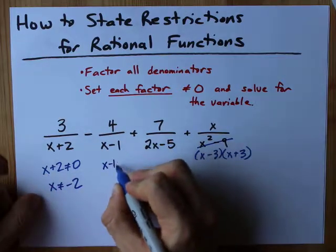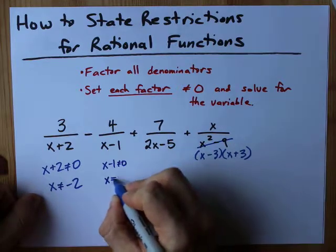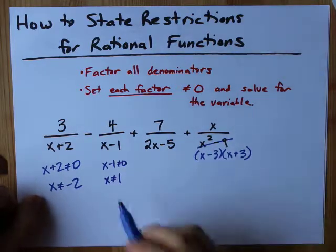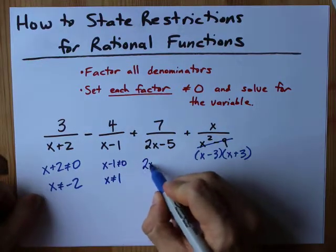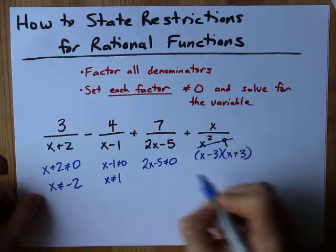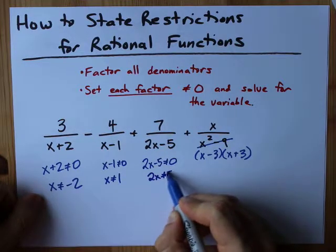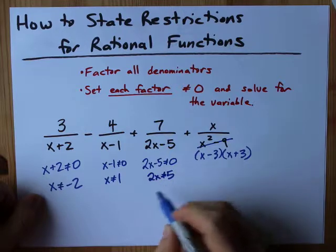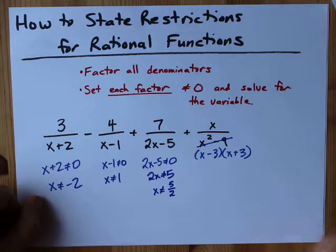x minus one therefore cannot be zero and when you move the one over x can't be positive one because then one minus one would be zero and you can't do that. 2x minus five is not allowed to be zero. Move the five over 2x is not allowed to be the same as five and dividing both sides by two gives me x cannot be five halves or 2.5.